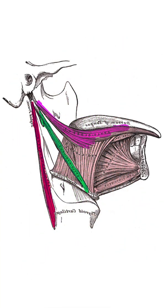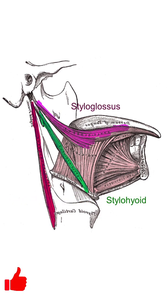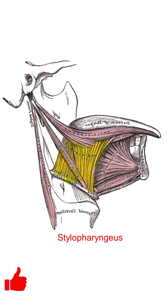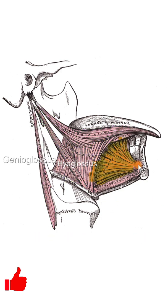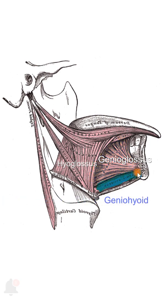Also, muscles that attach to the styloid apparatus, like the stylohyoid, styloglossus, and stylopharyngeus. Other muscles of the mouth and tongue include the hyoglossus, genioglossus — referring to the superior genial tubercle on the mandible — geniohyoid, referring to the inferior genial tubercle on the mandible.